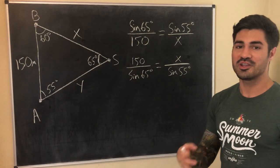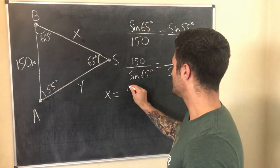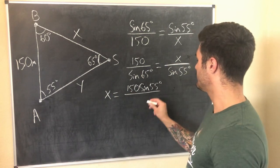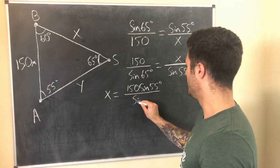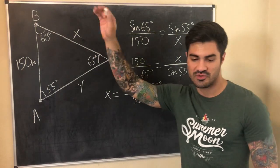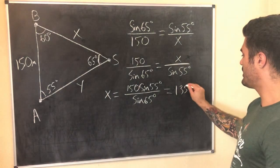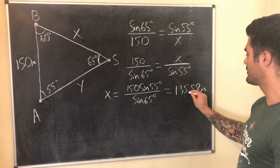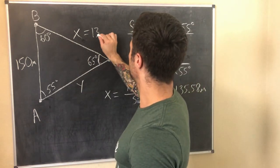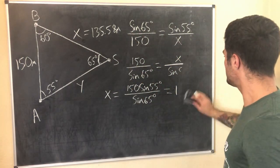All we have to do is multiply both sides by sine of 55 degrees, giving us: x equals 150 times sine of 55 degrees over sine of 65 degrees. That is the distance from the ship to Station Baker. Punching that into a calculator gives 135.58 miles. We'll write that down because we'll need to erase to make room to find the second distance.